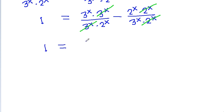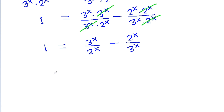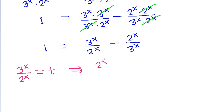So, 1 is equal to 3 to the power x divided by 2 to the power x, minus 2 to the power x divided by 3 to the power x. Now suppose 3 to the power x divided by 2 to the power x is equal to t, then 2 to the power x divided by 3 to the power x will be equal to 1 divided by t.